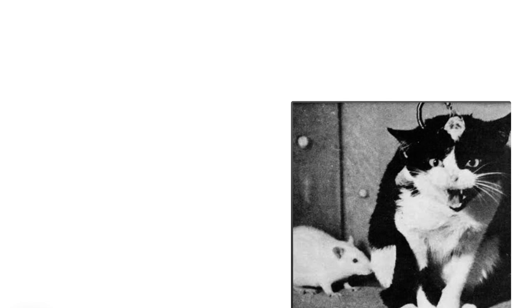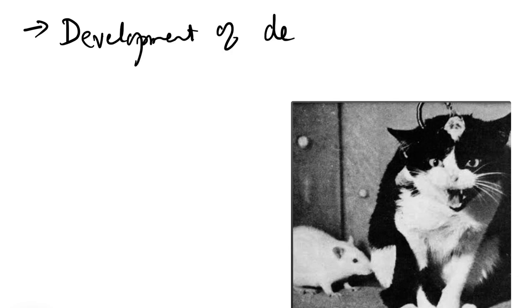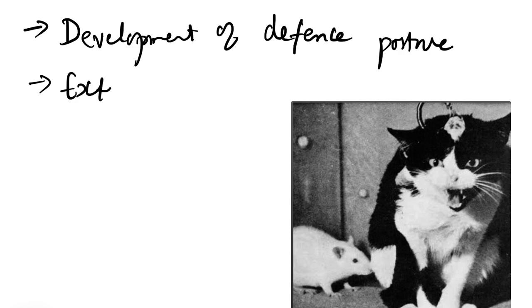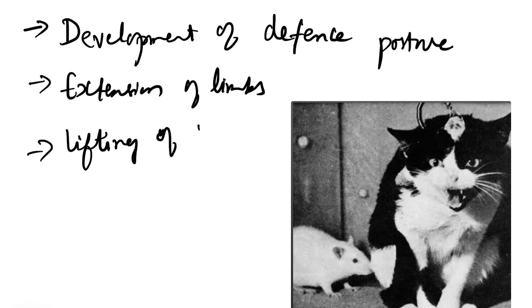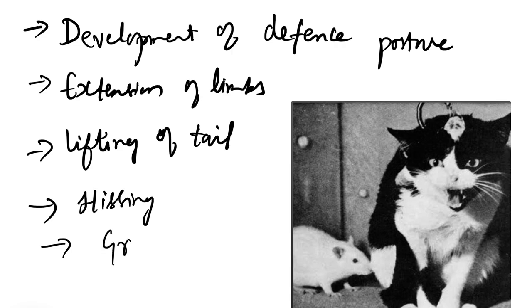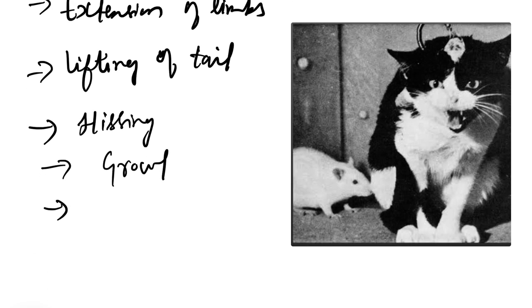Even with the slightest stimulus, the animal will behave in an abnormal manner like a rage phenomenon. The signs and symptoms during this clinical condition of sham rage include development of a defense posture, extension of the limbs, lifting of the tail, and the animal will make hissing sounds or even growling sounds — hiss, growl, or even spit.